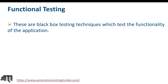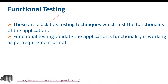Functional testing is a black box testing technique which tests the functionality of the application — validating whether the application's functionality is working as per requirements. Take the example of Gmail: we log into Gmail, compose an email, fill in the to-address, subject line, and body contents, then send the email. Once sent, it goes to the sent box — this is what we test as part of functional testing.